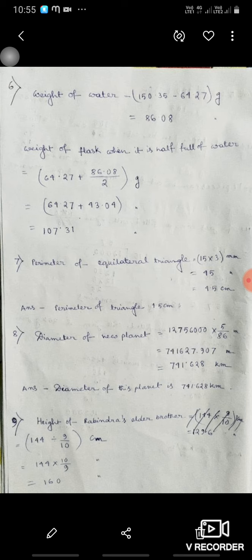So 64.27 plus 86.08 divided by 2, that is 64.27 plus 43.04, equals 107.31 gram. Perimeter of equilateral triangle, if side is 15.355 centimeter, is 3 times 15.355 centimeter.